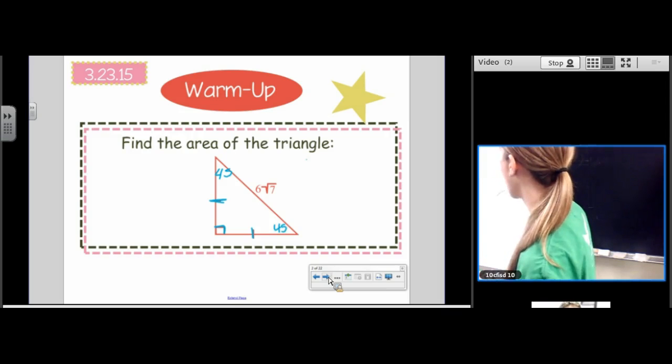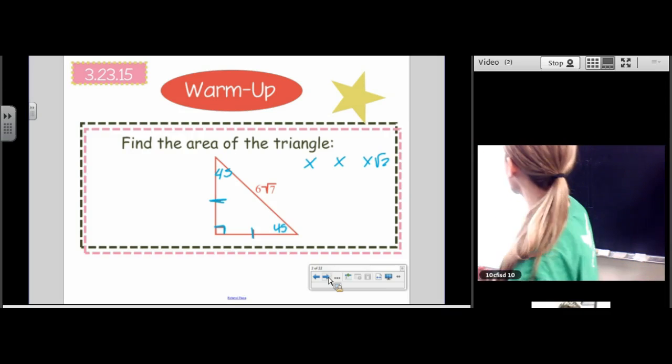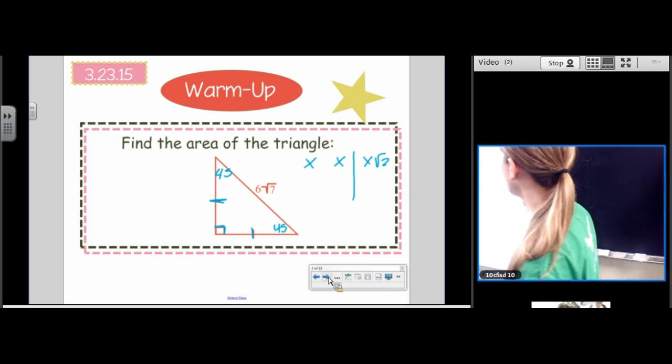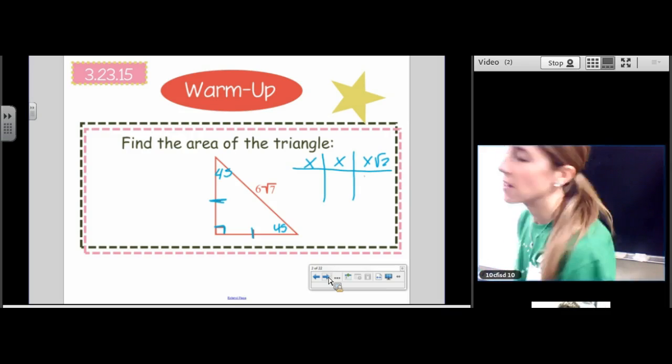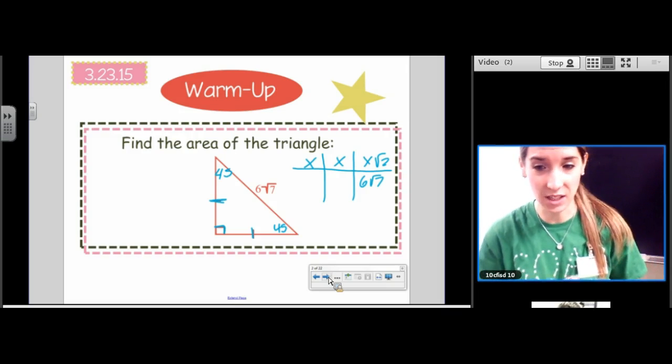So we know this follows the pattern x, x, x root 2. And we know the side we're given is the hypotenuse. Now, unfortunately, that says 6 root 7. It doesn't say 6 root 2.